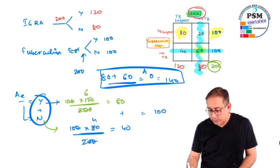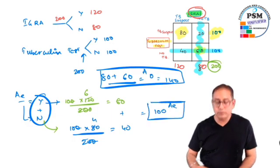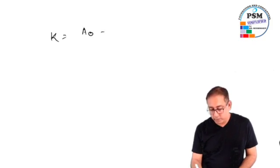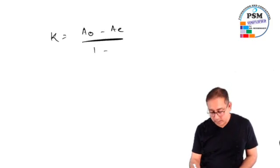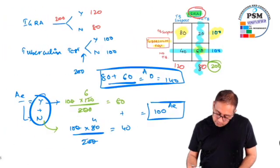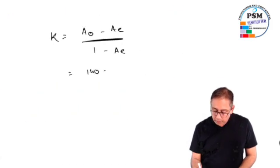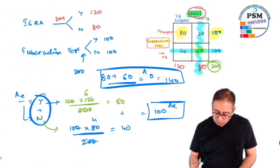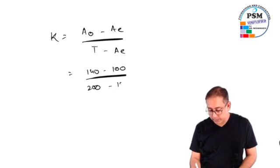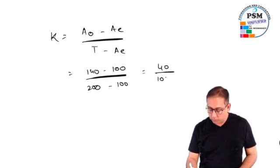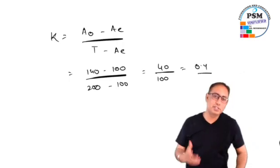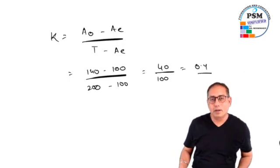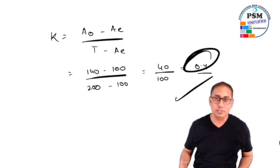So 60 plus 40, that is 100, is the A_e. Now how to solve the answer? Kappa is observed minus expected over total minus expected. Observed was 140 minus 100 over total, which was 200, minus expected, that is 100. So that will come out to be 40 over 100, that is 0.4. So that's just a small way to solve the kappa stats, and 0.4 was the technically correct answer in your exam.